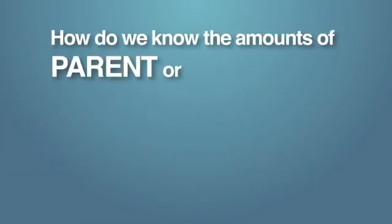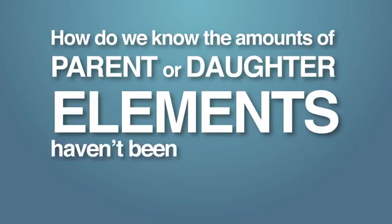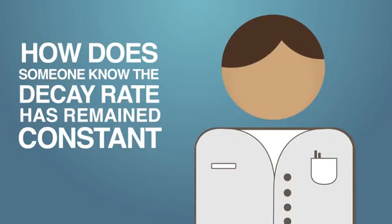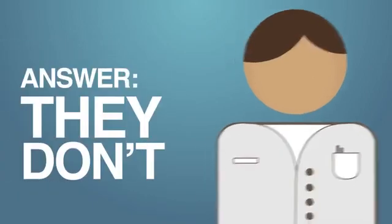How do we know the amounts of parent or daughter elements now in that sample haven't been altered by other processes in the past? How does someone know the decay rate has remained constant since the rock formed? The answer is, they don't.